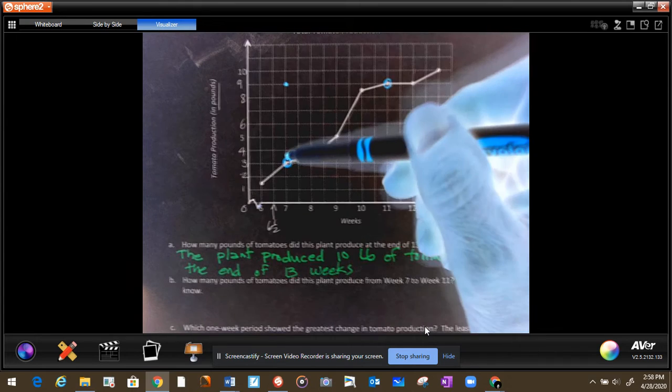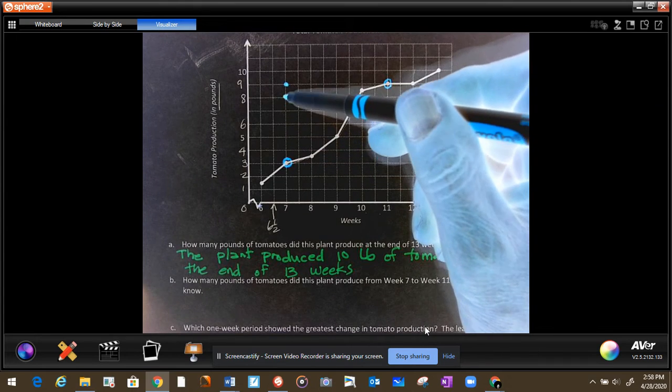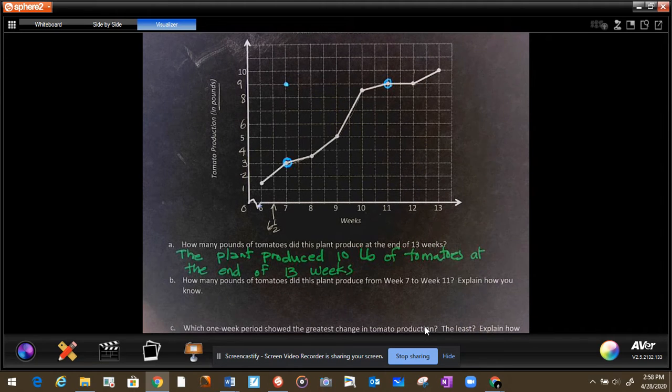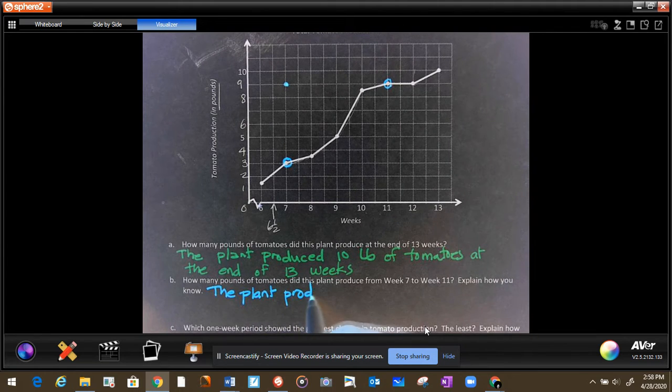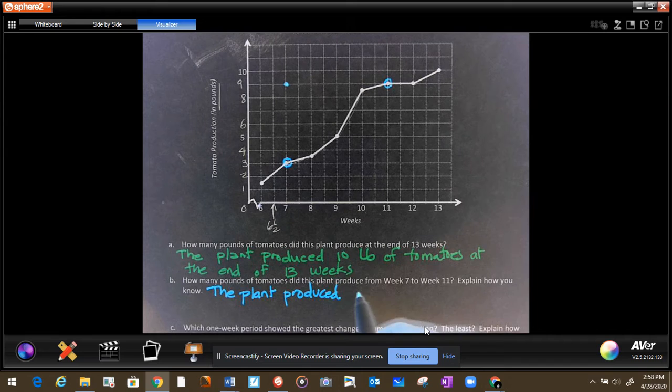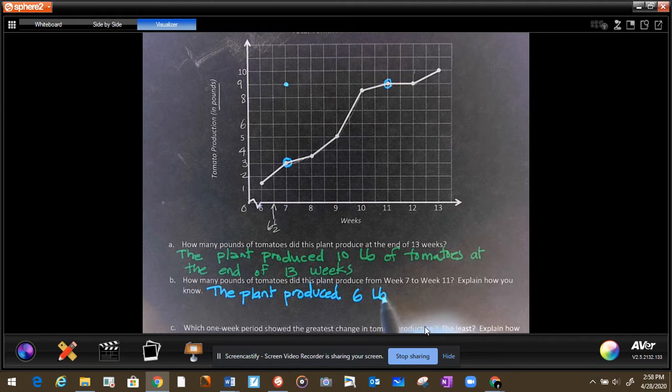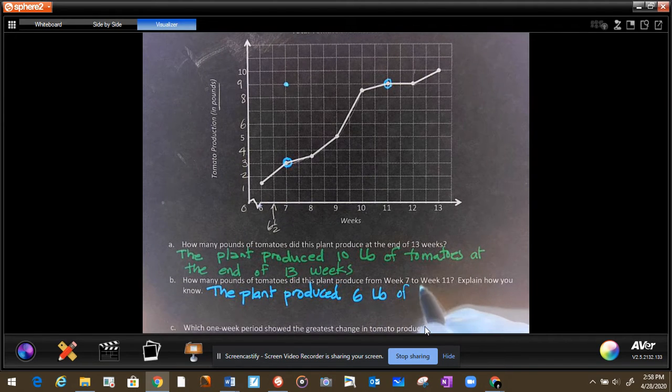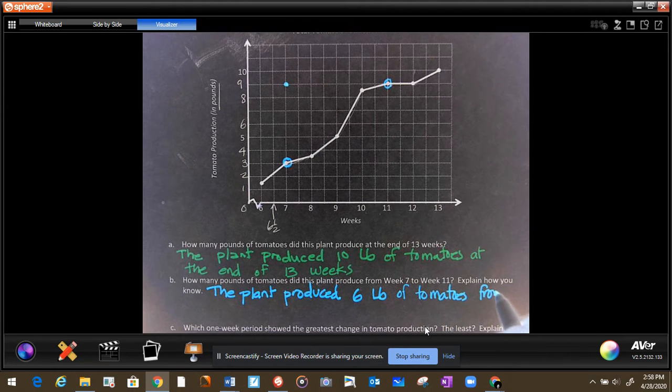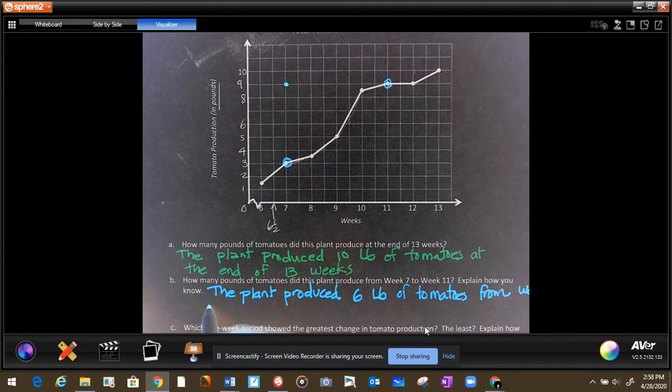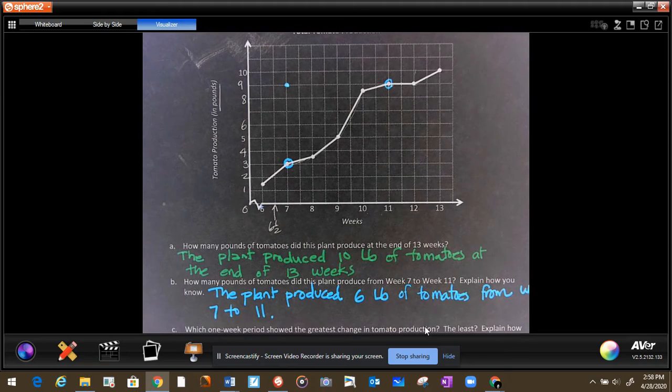So from here, if you can imagine moving this dot all the way over here, right above week 7, this is how much it grew. 1, 2, 3, 4, 5, 6. So the answer is the plant produced 6 pounds of tomatoes from week 7 to week 11. That is it.